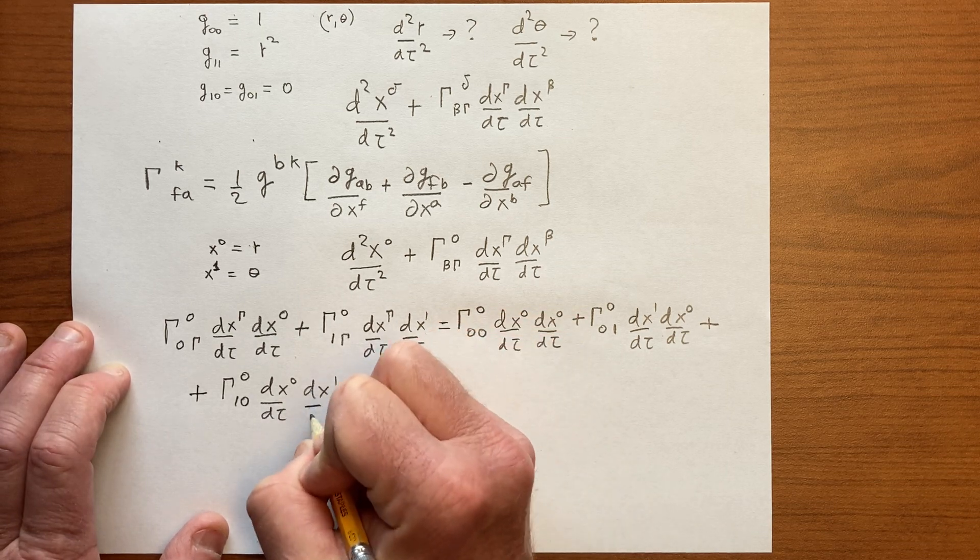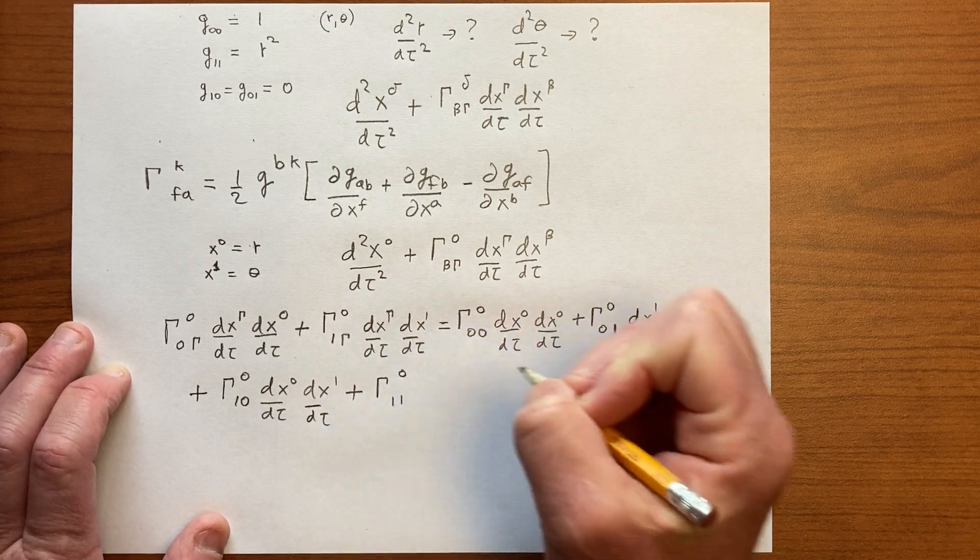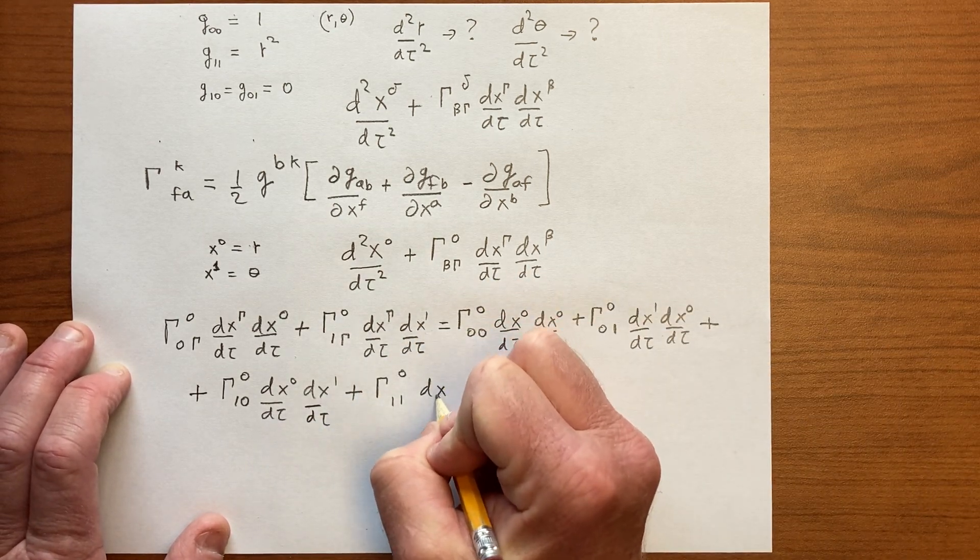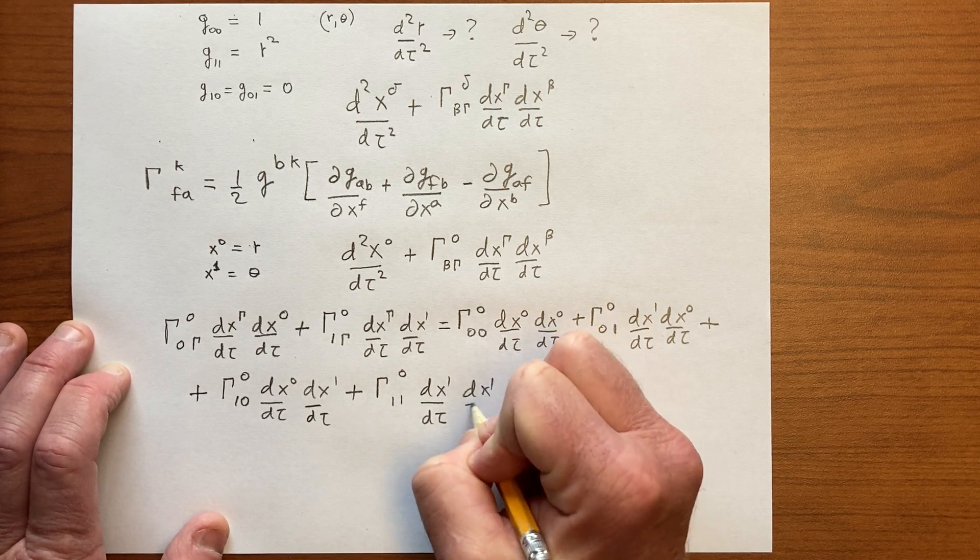And now dx^1/dτ, and the last term is Γ^0_11 dx^1/dτ dx^1/dτ.